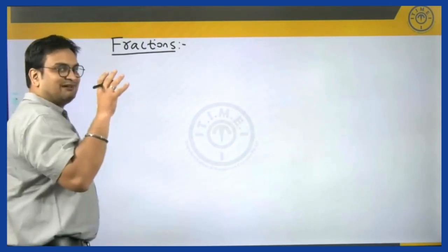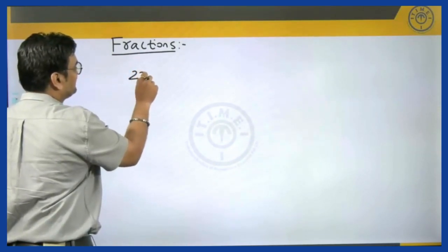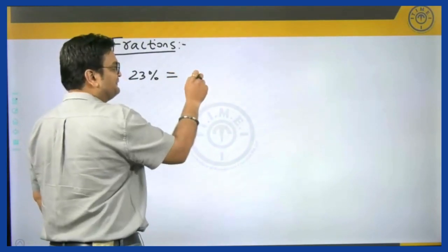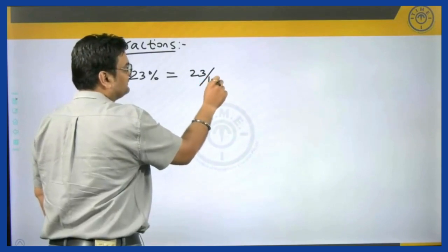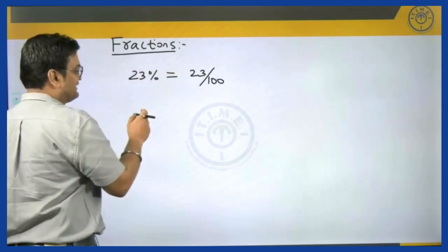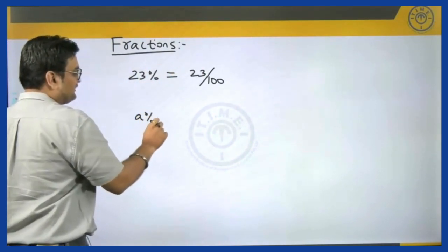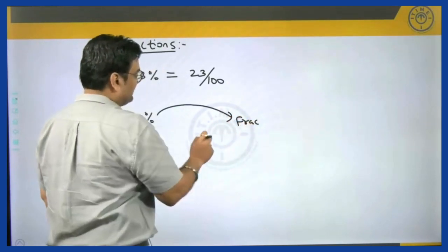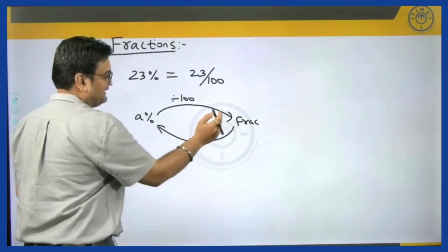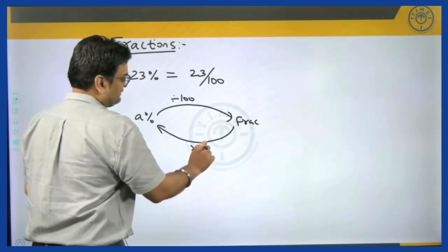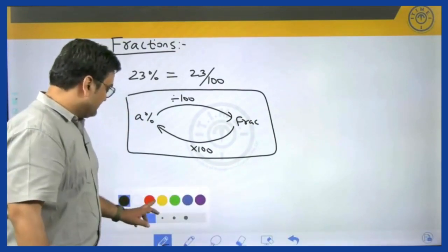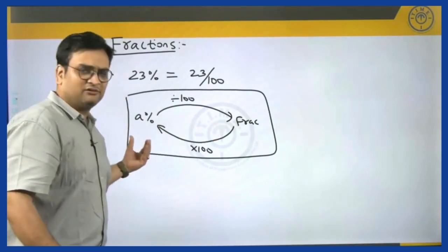Because that is the entire meaning of the word percentage itself. For example, if I say 23 percent — percent means for every 100 — so 23 percent mathematically means 23 for every 100. It is a fractional form, p by q form. So if you want to convert any percentage into fraction, the technique is very simple: divide by 100. And in reverse, if you want to convert any fraction to percentage, you do the reverse operation — multiply by 100. This way any percentage can be converted to a fraction or vice versa.